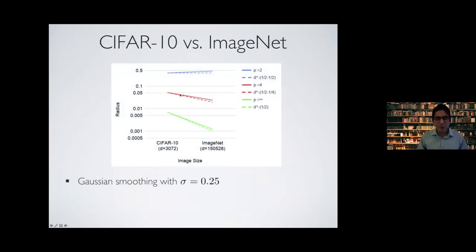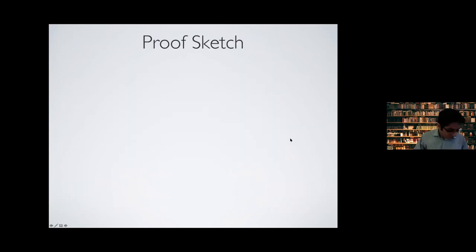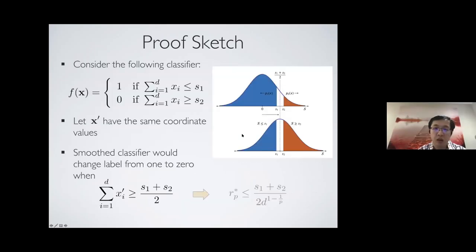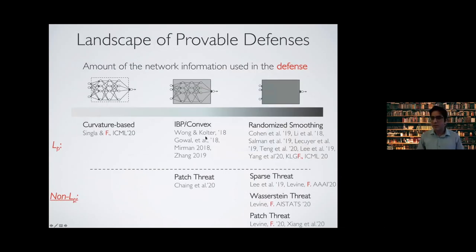We also looked at experiments comparing CIFAR-10 and ImageNet. CIFAR-10 has a smaller dimension compared to ImageNet. Theory suggests the certification level would decrease by an order of D^(1/2 - 1/P) when going from CIFAR-10 to ImageNet, and we roughly observe those behaviors for P=2, P=4, and P=infinity. For interest of time, the proof will be skipped — please take a look at the paper or contact me to discuss it.